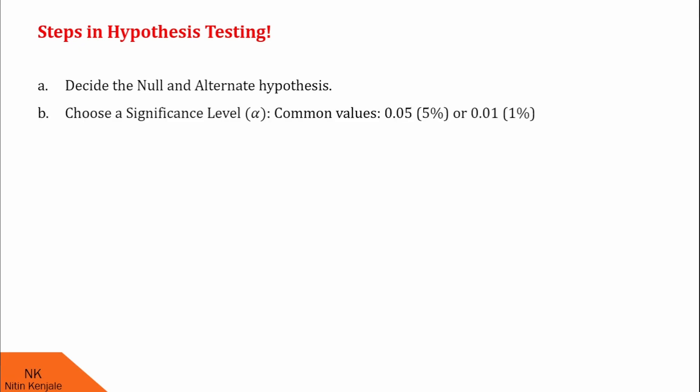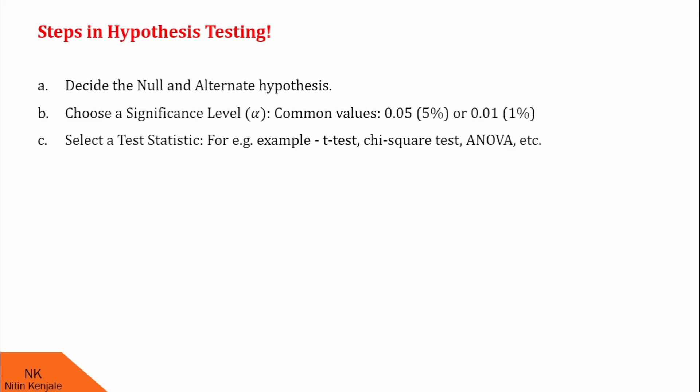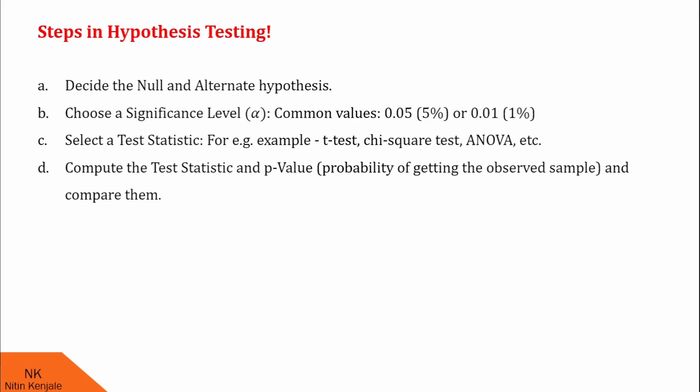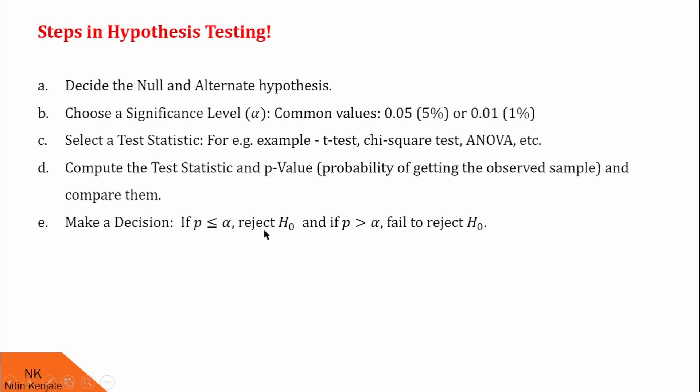I hope you understood these two different types of hypothesis testings. Now let us see what are the steps involved in hypothesis testing. First step is to decide the null and alternative hypothesis, that is H0 and HA. Next, we choose the significance level alpha — the most common values are 5% and 1%. Next, we select the test statistics, for example t-test, chi-square test, or ANOVA test. Next, we compute the test statistics and p-value, which is the probability of getting the observed sample, and we finally compare them. In the last step, we make our decision: if p is less than or equal to alpha, then we reject H0; and if p is greater than alpha, then we fail to reject H0, meaning we should accept H0.